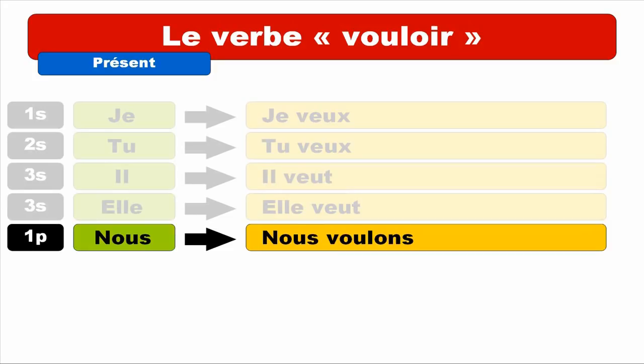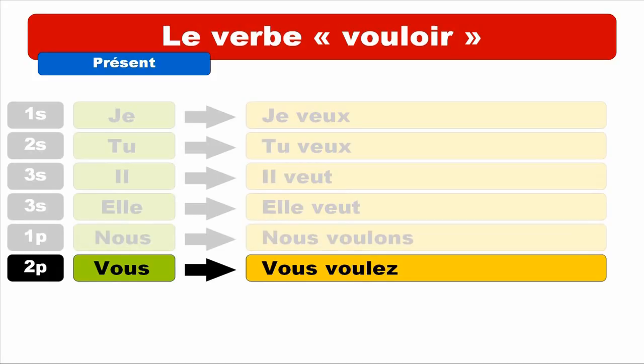Quite classical endings — for NOUS it's O-N-S, and for VOUS it's E-Z. And keep in mind that VOUS VOULEZ — the E-Z ending when combined especially with verb endings sounds like E. VOUS VOULEZ. And then last but not least, third person of the plural — ILS masculine, ELLES feminine.